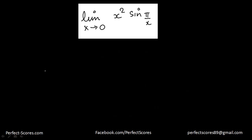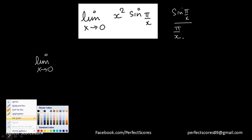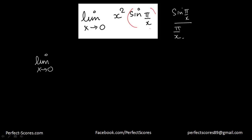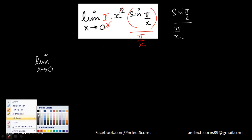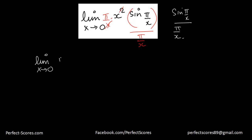Let's go ahead and do this question. Limit of x tends to 0 — as soon as I see sin(something), I need to get that same something in the denominator. So I divide and multiply the whole expression by π/x. The x's cancel, and I get limit of π · x · sin(π/x) divided by π · x · sin(π/x), setting up the standard sin(θ)/θ form.